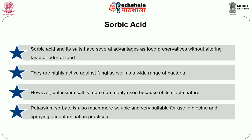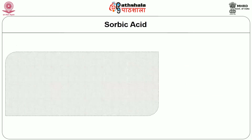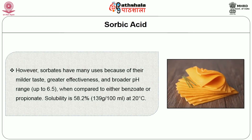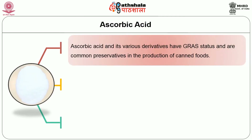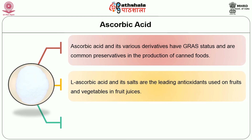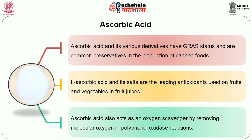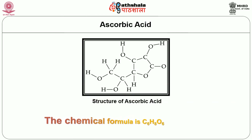Potassium sorbate is also much more soluble and very suitable for use in dipping and spraying decontamination practices. Sorbates have many uses because of their milder taste, greater effectiveness and broader pH range — even up to 6.5 — when compared to either benzoate or propionate. Solubility is 58.2% at 20 degrees centigrade. Now let us see about ascorbic acid. Ascorbic acid and its various derivatives have GRAS status and are common preservatives in the production of canned foods. These salts are the leading antioxidants used on fruits and vegetables and in fruit juices. It also acts as an oxygen scavenger by removing molecular oxygen in polyphenol oxidase reactions. The chemical formula is C6H8O6.